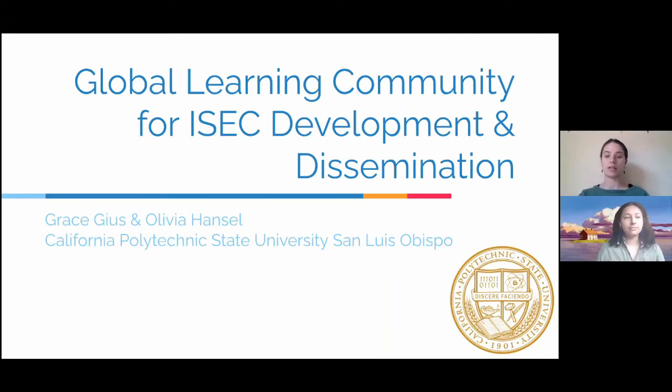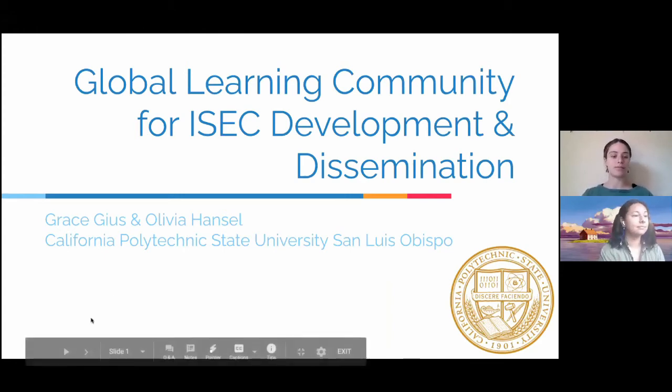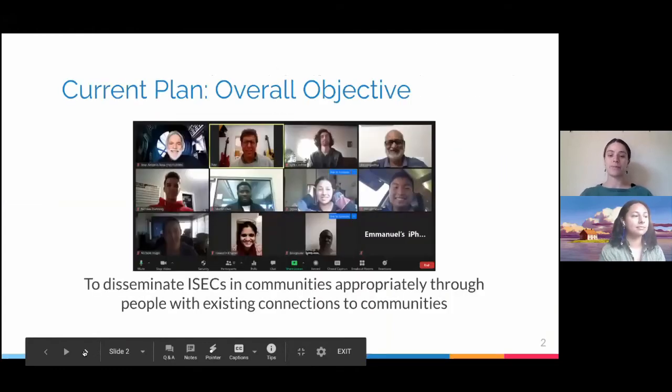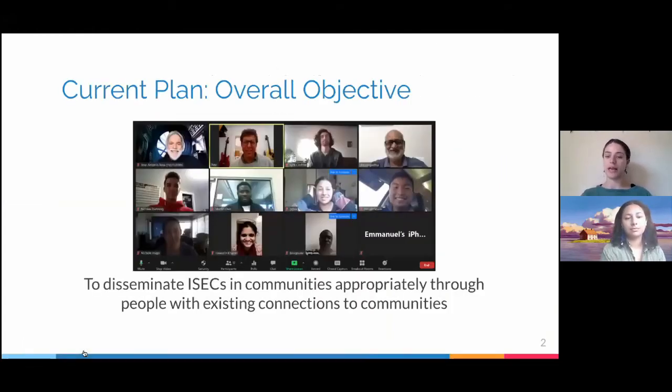Hi, my name is Olivia Hansel. And hi, my name is Grace Juice. And we are part of the development and dissemination team for ISEC. Our overall objective with ISEC is to build and disseminate ISECs in other countries using existing connections through communities. The picture below is our weekly super group meeting where global collaborators and student researchers get together to discuss building and dissemination of ISECs.